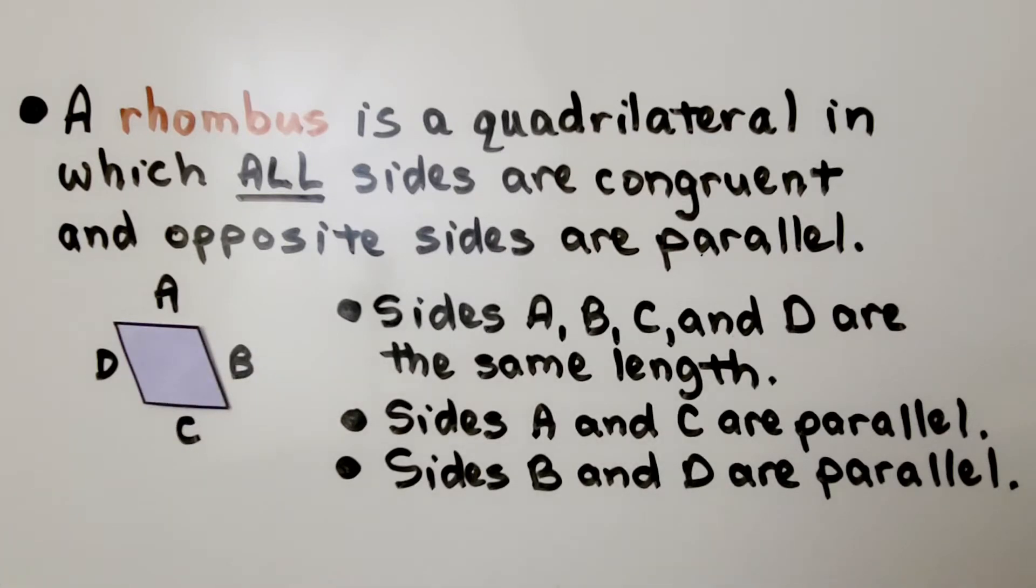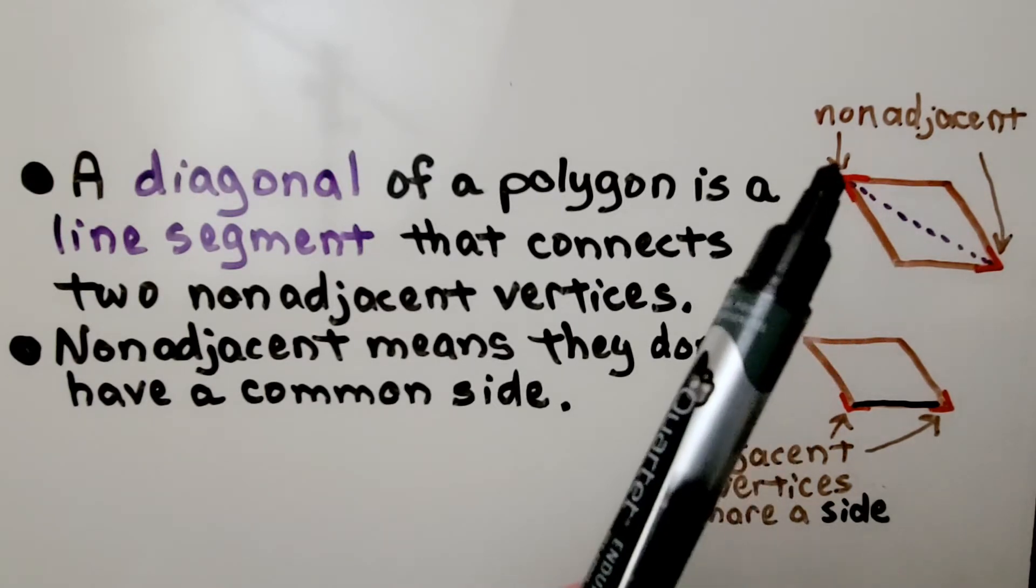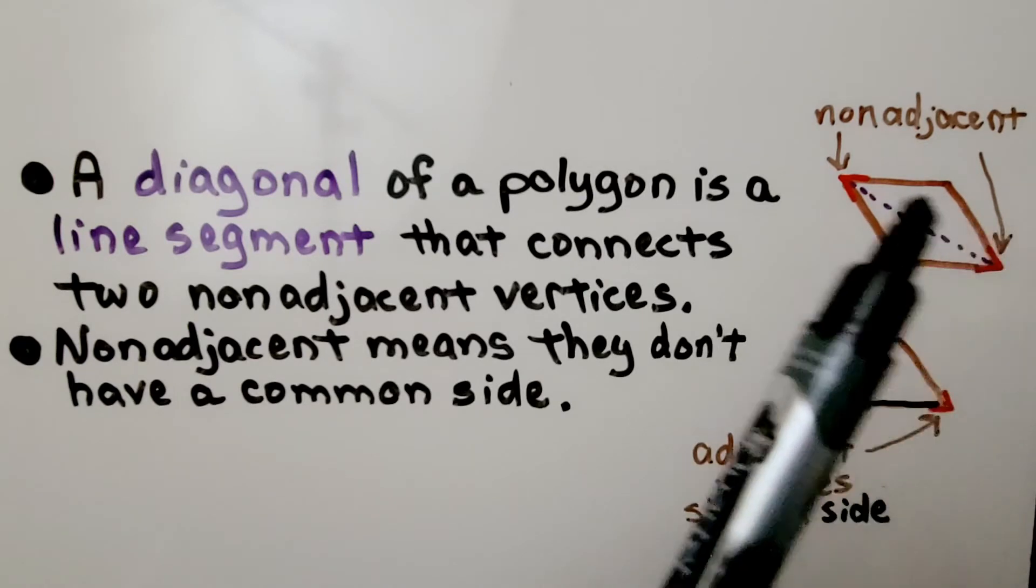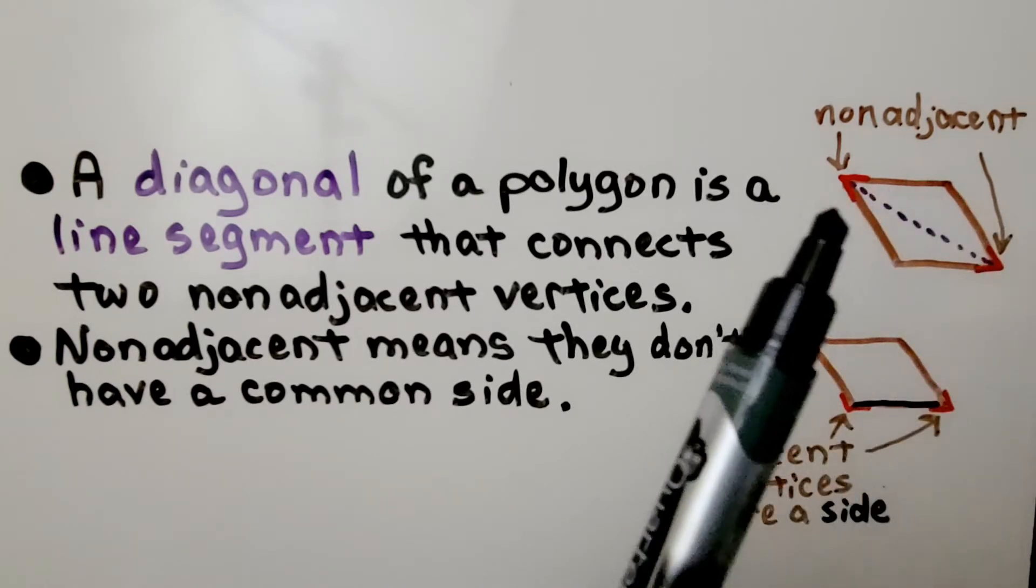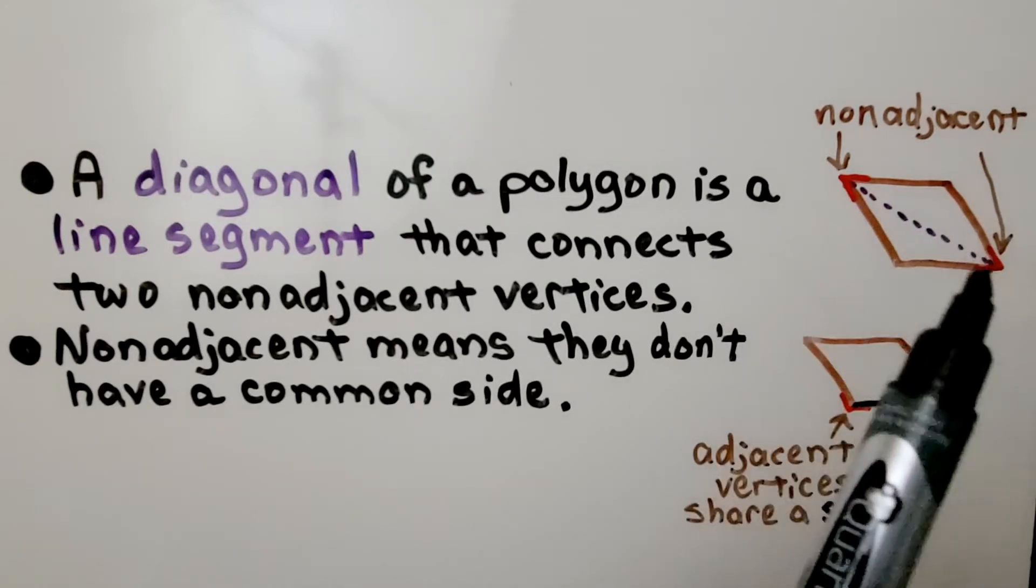A diagonal of a polygon is a line segment that connects two non-adjacent vertices. Non-adjacent means they don't have a common side. So this vertex and this vertex—these are non-adjacent, they don't share a side. These are adjacent vertices; they're sharing this side as a common side. So a diagonal is a line segment that connects two non-adjacent vertices.